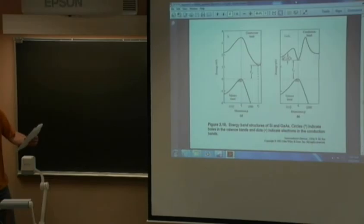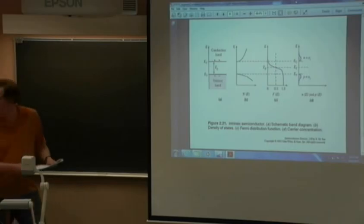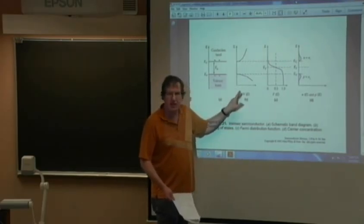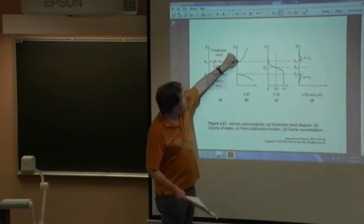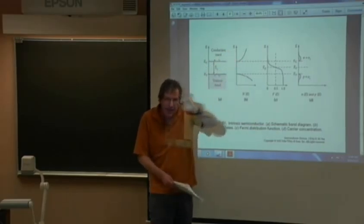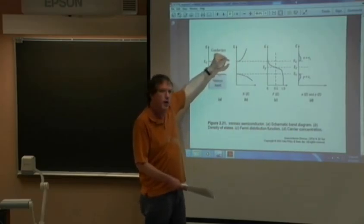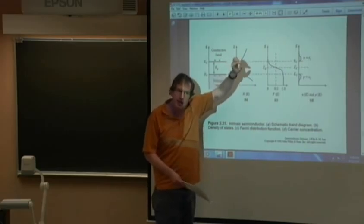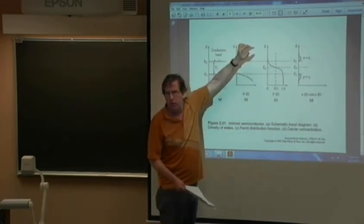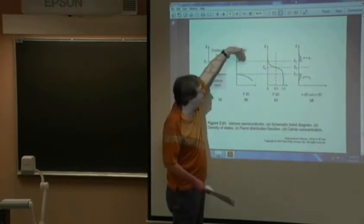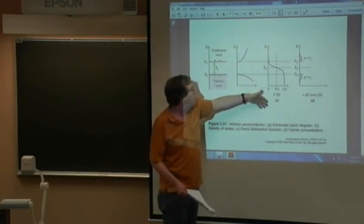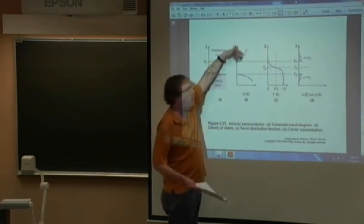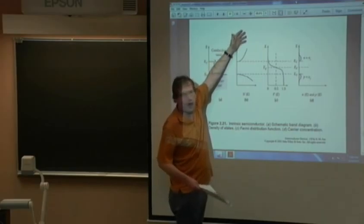The density of states N(E): if I take a little delta-E sliver near the band edge, I have very few energy levels in which I can put carriers. But as I go deeper into the bands — it goes up by the square root of E — taking the same delta-E sliver gives many more places to put carriers. Kind of like a parking garage: as you go higher up, you get more parking spaces; everybody parks at the ground floor first.